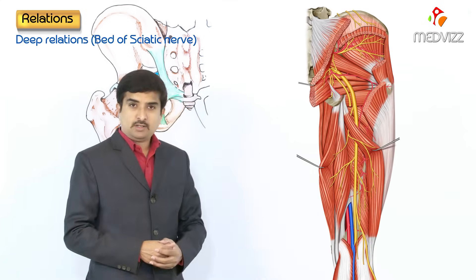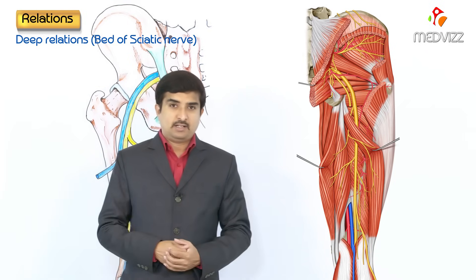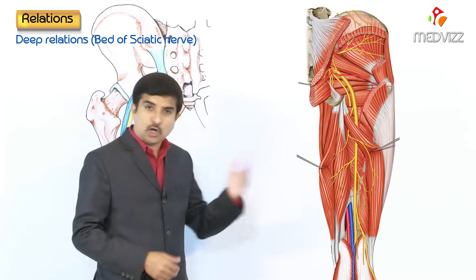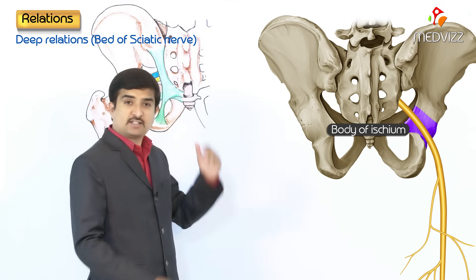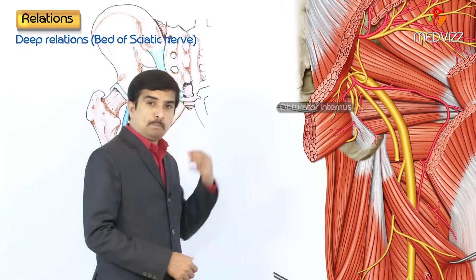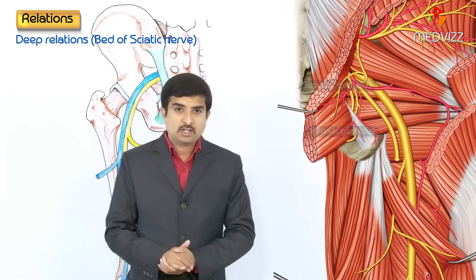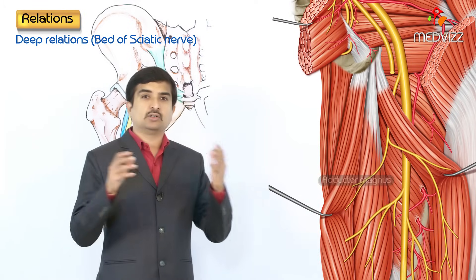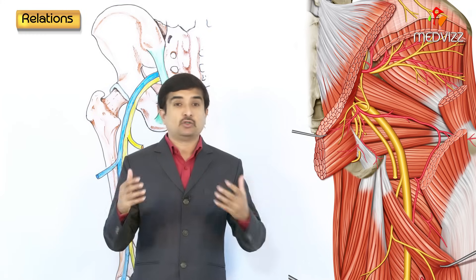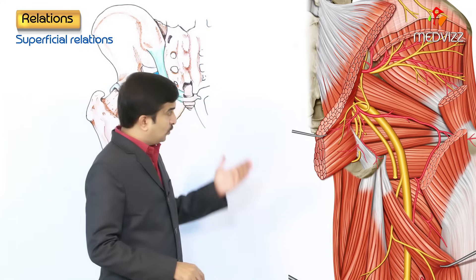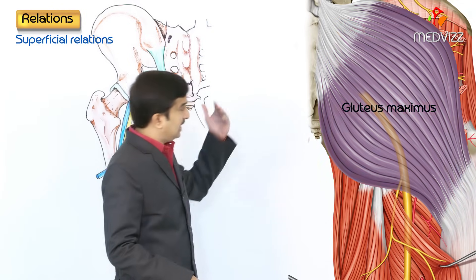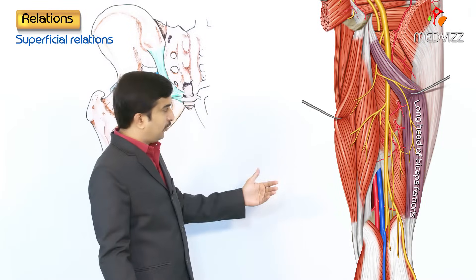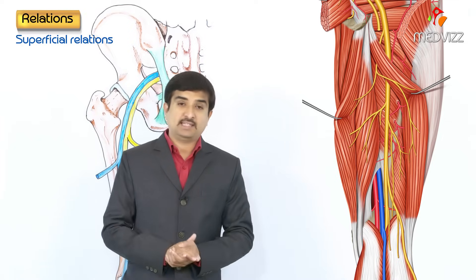Regarding the relations of the sciatic nerve, the deep relations — that is, the bed of the sciatic nerve — from above downwards include: the body of the ischium, posterior surface of the obturator internus, superior and inferior gemellus muscles, quadratus femoris, and adductor magnus. For superficial relations from above downwards, as seen in the picture, the sciatic nerve is related to the gluteus maximus in the gluteal region and to the long head of the biceps femoris in the thigh.